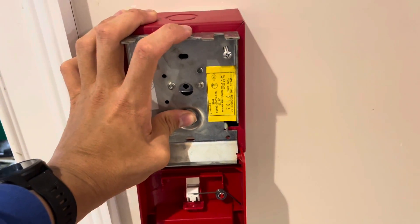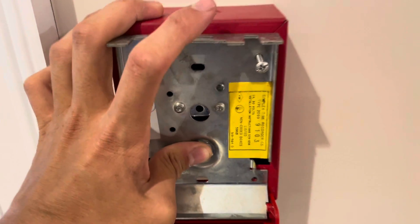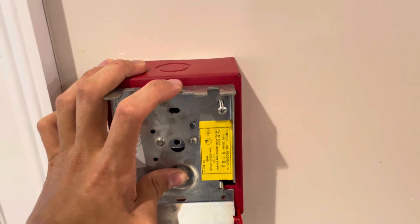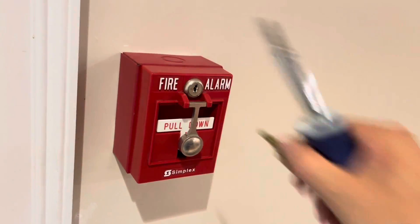Now I'm just fastening this pull station to the box. Since I haven't disabled the zone I have to hold the button in while I do this so the alarm doesn't sound. Now we can close that station.